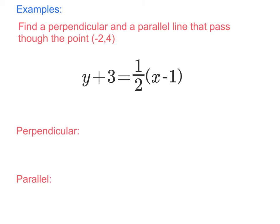Let's first work with the perpendicular line. We know perpendicular line slopes are negative reciprocals of each other. So if this line's slope is 1/2, then the negative reciprocal is negative 2. We use this point to create our new equation: y minus 4 equals the slope, negative 2, times x plus 2.